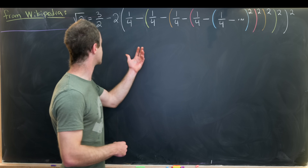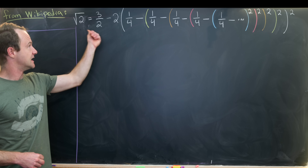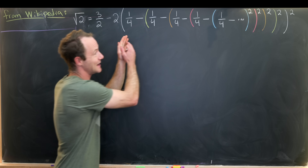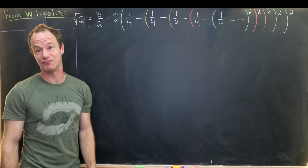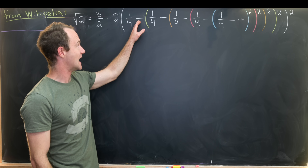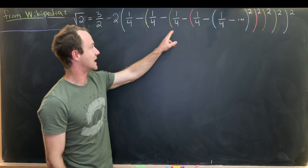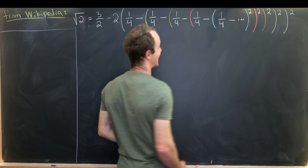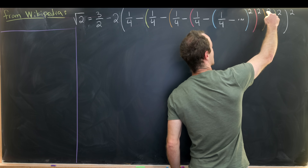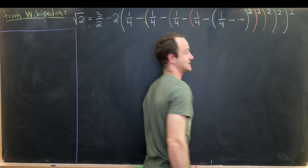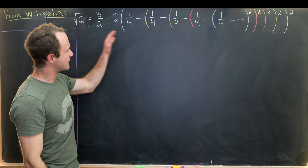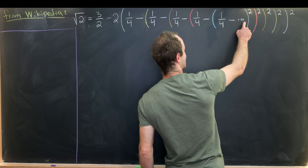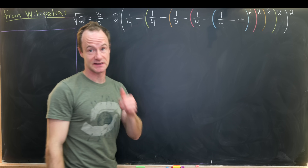The identity goes like this: the square root of 2 is equal to 3 over 2 minus 2 times this infinitely nested object. We have 1 quarter minus 1 quarter minus 1 quarter minus 1 quarter minus 1 quarter, where we have all of that nesting, and then we've got these squares on all of those nested objects as well. The dot dot dot represents the infinite nesting here.